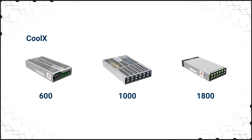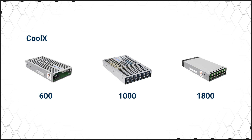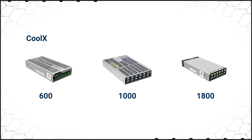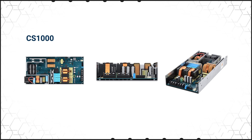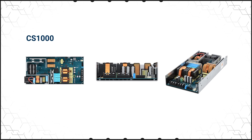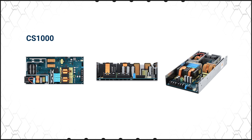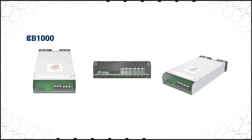For BF rated applications, the Excelsis Cool X600, 1000, and 1800 provide up to 12 isolated outputs in a bandless, modular design, while the high efficiency CS1000 and Ultra Compact XB1000 offer a single output.